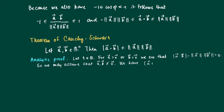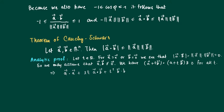If we form the inner product of a plus tb with itself, where t is a scalar, we know from the properties of inner products that this is always at least 0, and this holds for all t. Working out the left-hand side, we get the inner product of a with itself, plus 2t times the inner product of a and b, plus t squared times the inner product of b with itself, and this is at least 0.